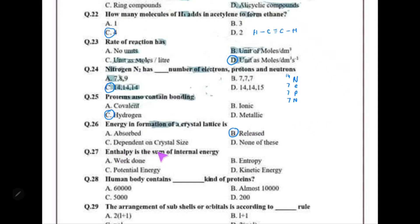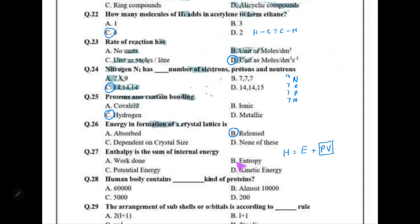Enthalpy is denoted by H. It is the sum of internal energy plus PV, where PV is a form of pressure-volume work.